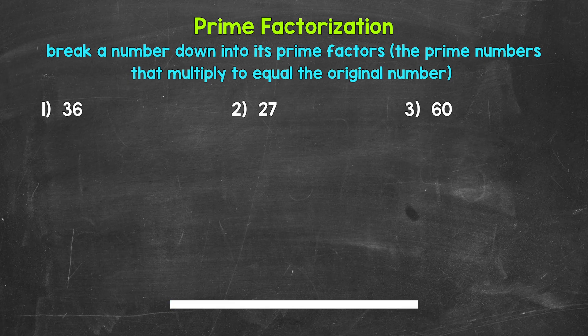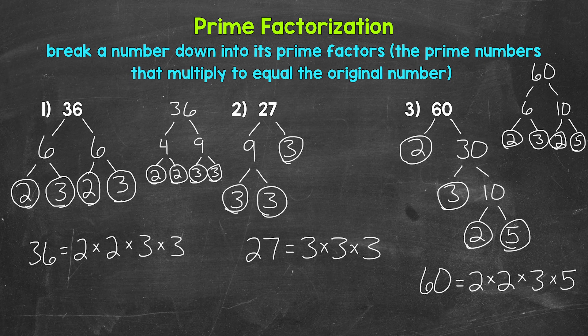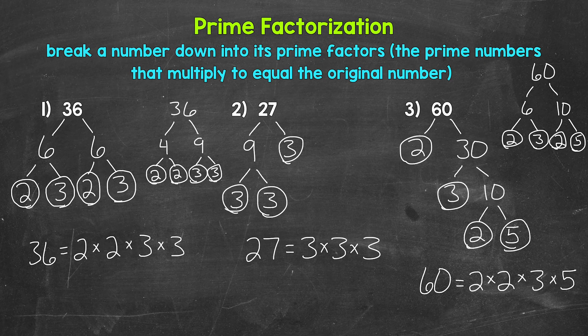Okay, so that's two minutes. Let's go over the answers. Remember, there are different paths we can take depending on the number, so if you have something different than what I wrote out, that's okay — as long as you have the same prime numbers. Taking a look at number 1, we have 36. 36 has a handful of different factors we can start with: 2 and 18, 3 and 12, 4 and 9, or 6 and 6. No matter the path, you should have 2 times 2 times 3 times 3.